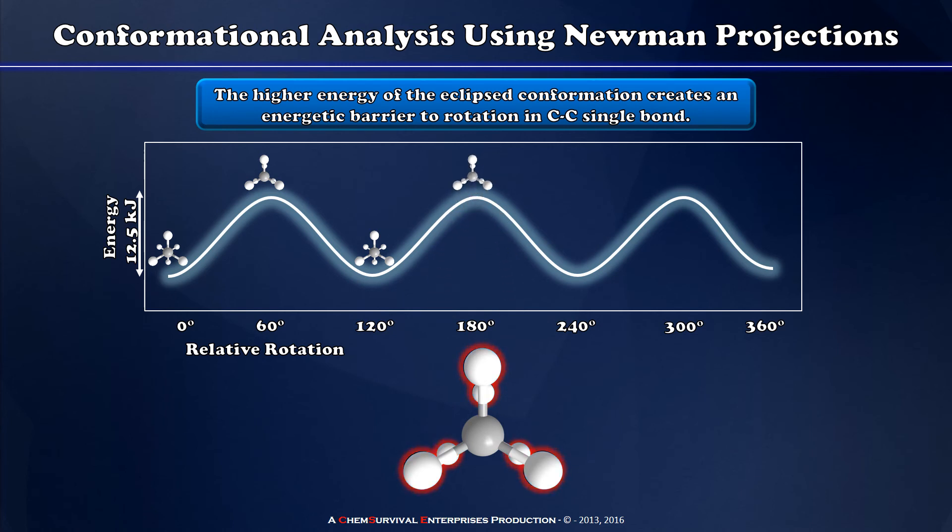Yet another 60 degrees takes me to another staggered conformation, and so on until eventually I've completed an entire 360 degree bond rotation. So my final rotation takes me back to the very beginning, and I can place this at the other end of my diagram.